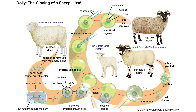Dolly the sheep was a groundbreaking scientific achievement in the field of genetics and biotechnology. She was born on July 5, 1996, in Scotland, and was the first mammal to be cloned using somatic cell nuclear transfer. Dolly was cloned from the somatic cells of a Finn Dorset ewe. Her health deteriorated when she was six years old due to progressive lung disease, resulting in her being euthanized. Dolly's cloning raised ethical considerations surrounding the use of cloning technology, including the potential for human cloning, genetic engineering, and the welfare of cloned animals.